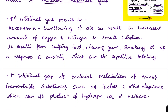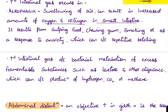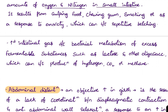Increased intestinal gas occurs in aerophagia — that is, swallowing of air — which can result in increased amounts of oxygen and nitrogen in the small intestine. This results from gulping food in urgency, chewing gum, smoking, or as a response to anxiety, which can lead to repetitive belching.